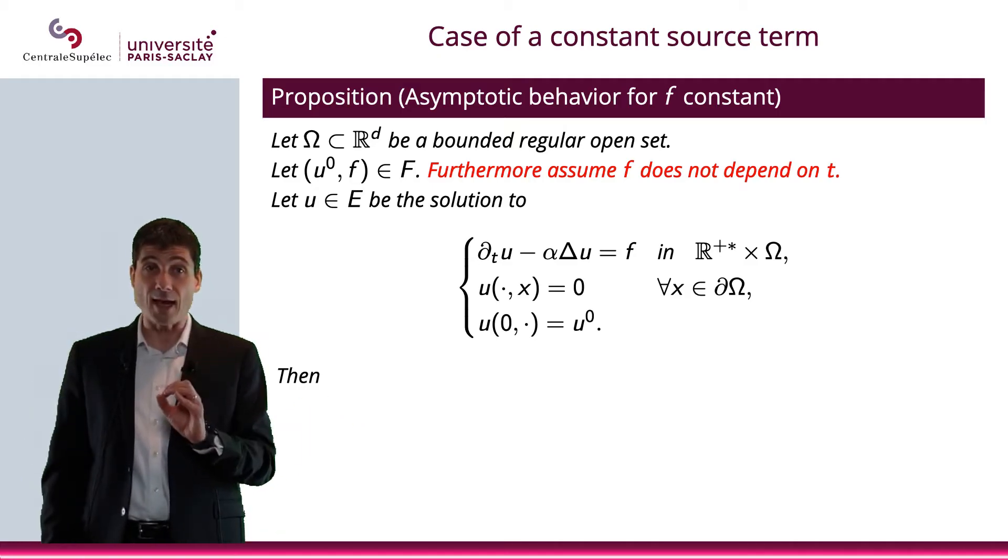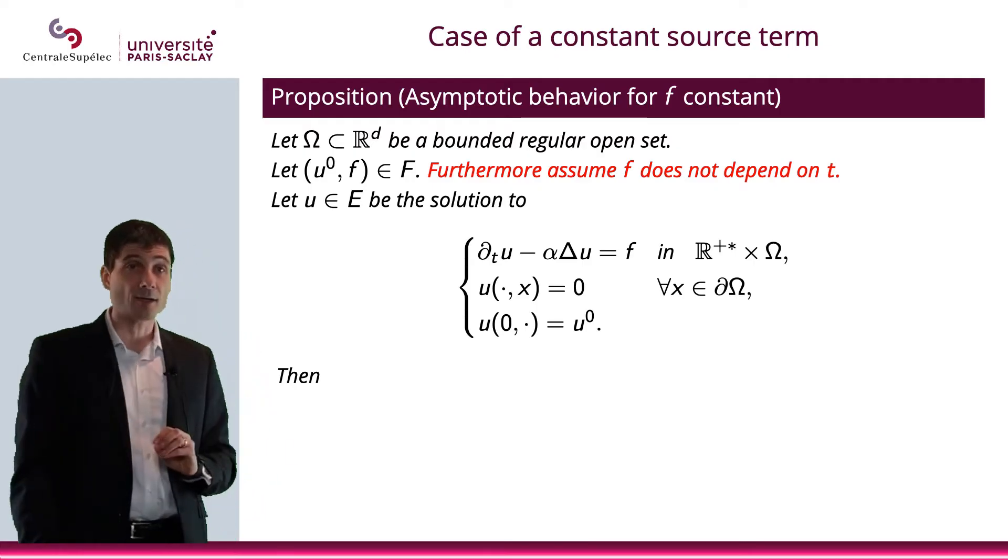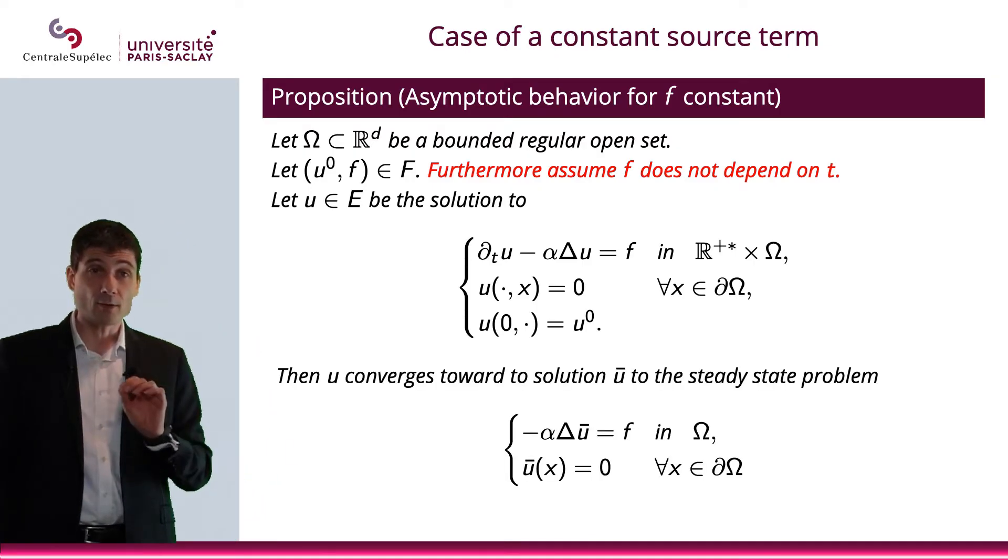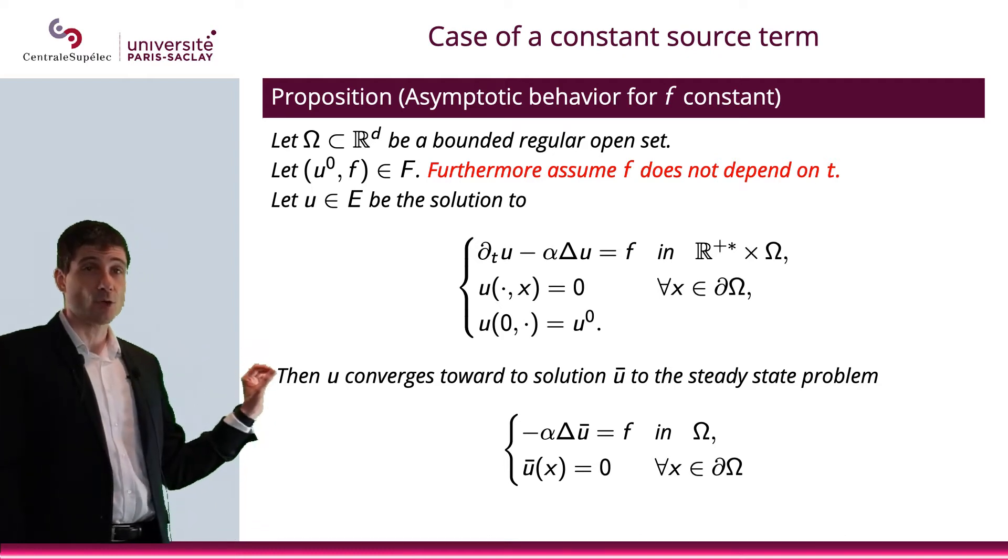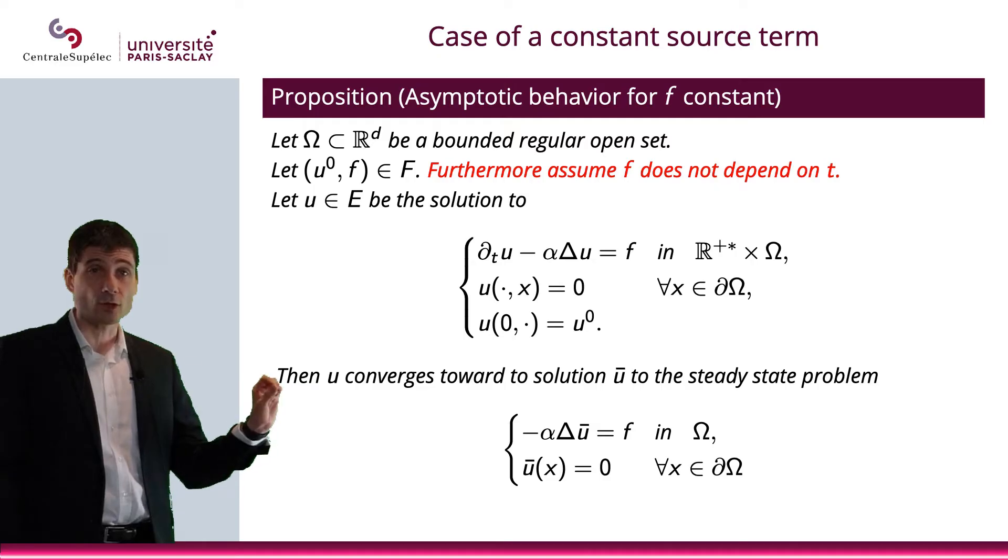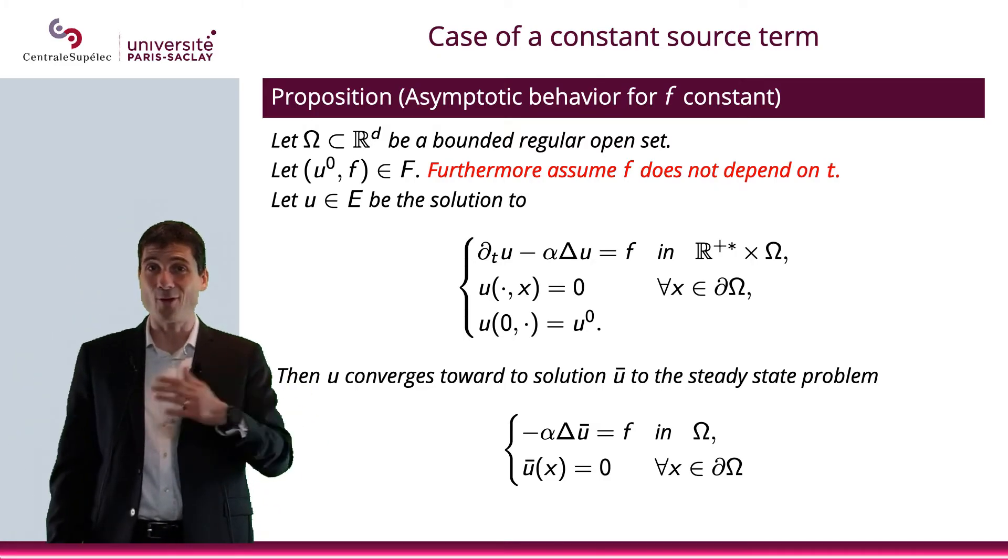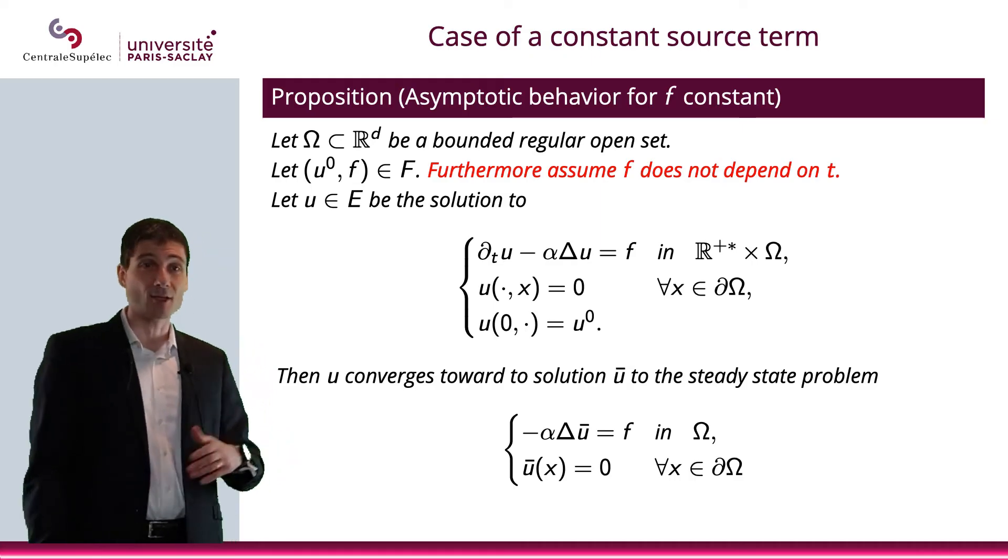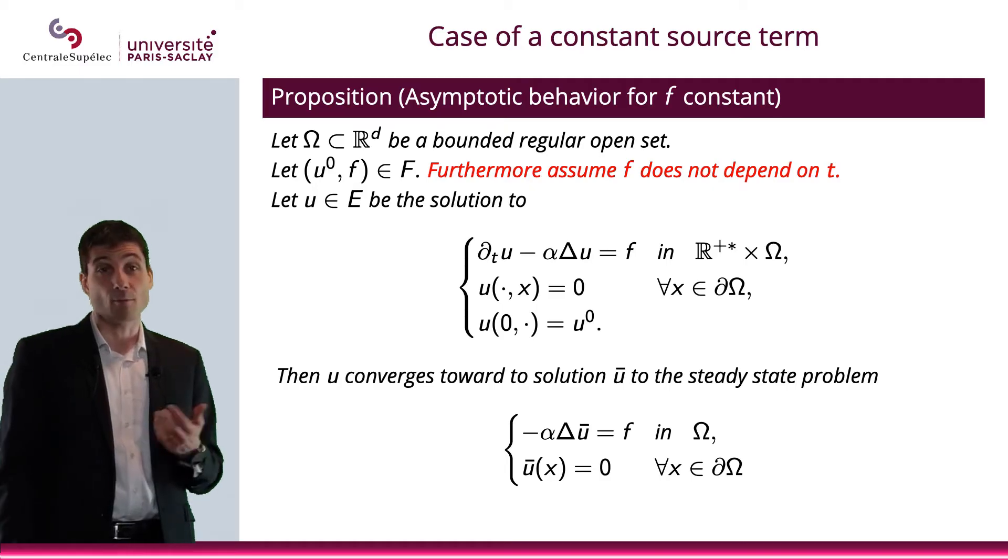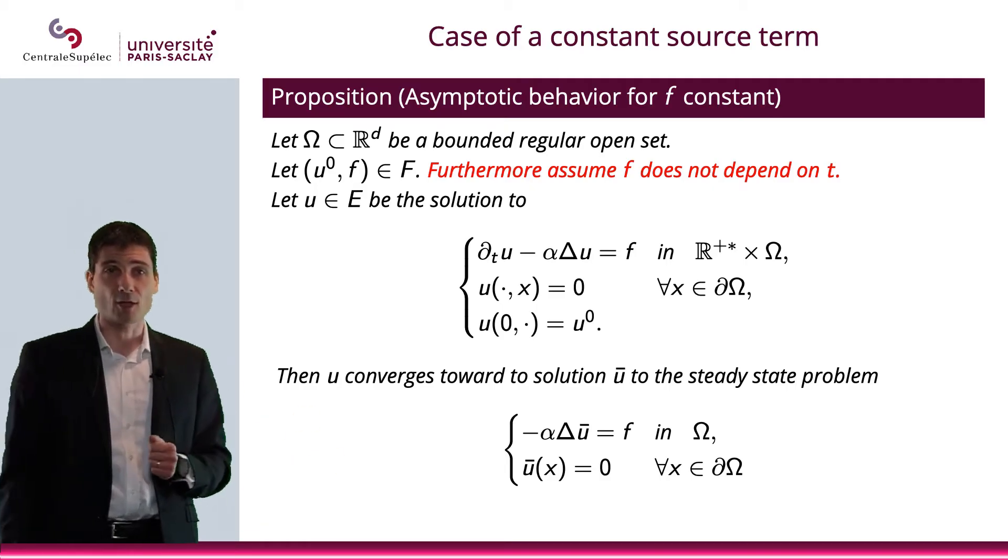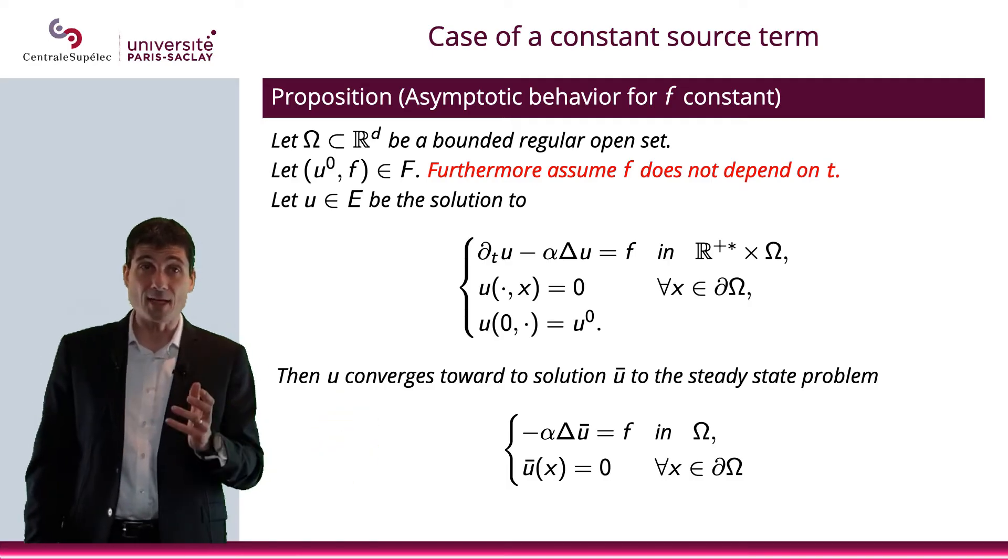And what we're going to state is a property on u. What we're going to say is that u converges toward a solution u bar that is a solution to the steady state problem that we have discussed before with the elliptic equations. It's minus Laplace u bar equals f and the homogenous Dirichlet boundary condition. So it's the Poisson problem.